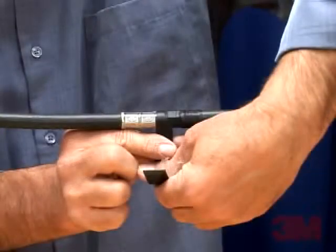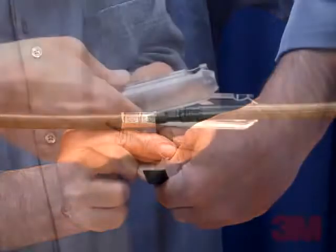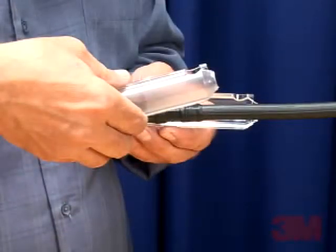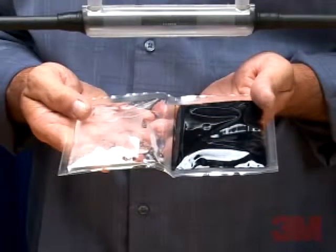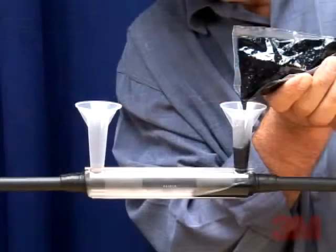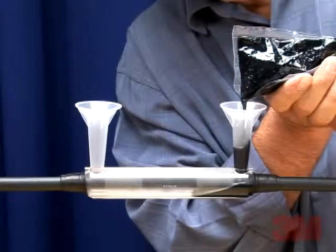The 3M brand 82A series is UL listed, 486D file number E102356. The 82A series power cable splice kits are designed for use in weather exposed, direct buried or submersible locations.